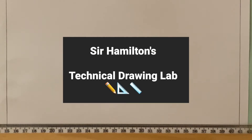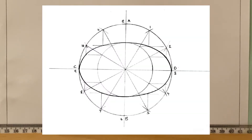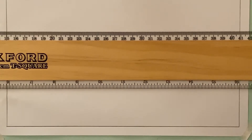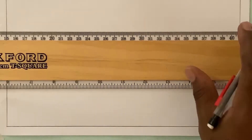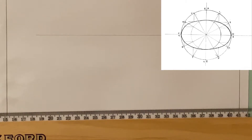Welcome back to the technical lab. In the last video we drew an ellipse using the rectangular method. Today we're going to construct an ellipse using the auxiliary circle method. With this method, I'll be drawing two circles — one representing the major axis and the other representing the minor axis. The minor axis is 70 millimeters and the major axis is 120 millimeters.